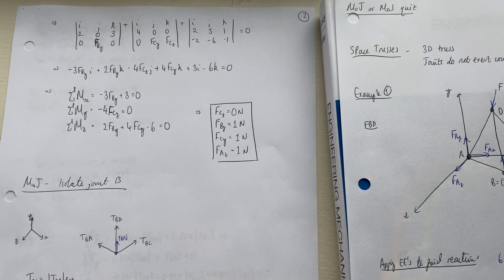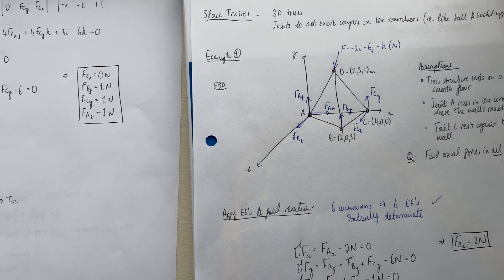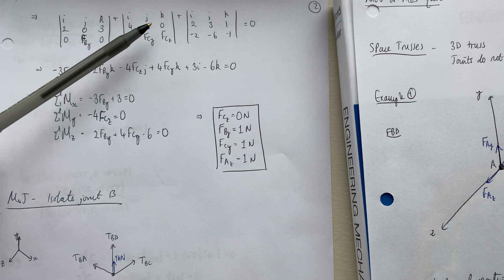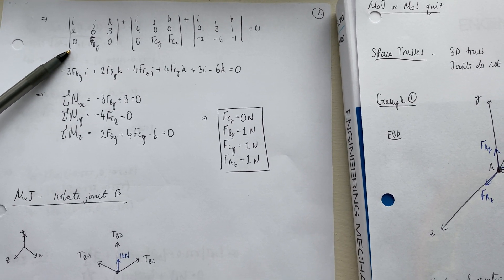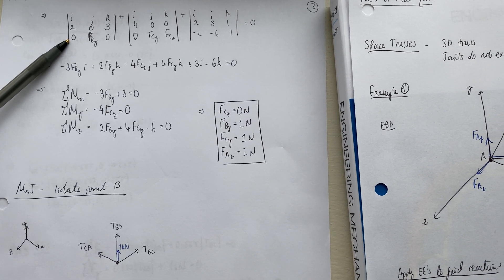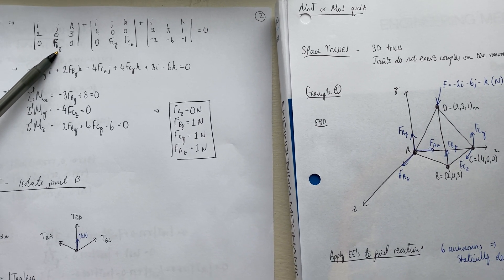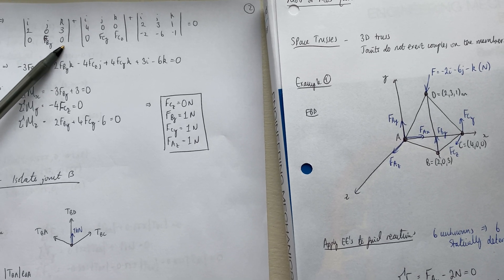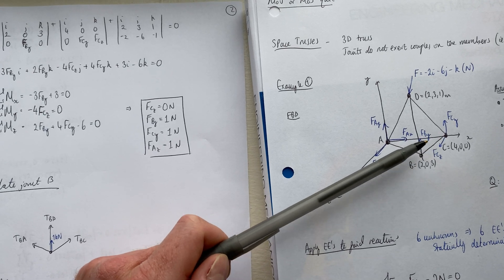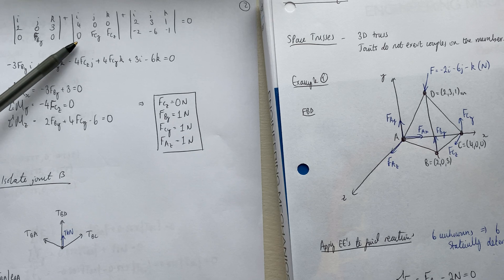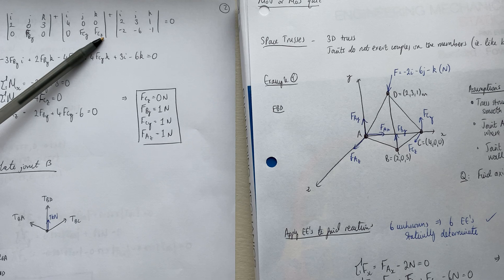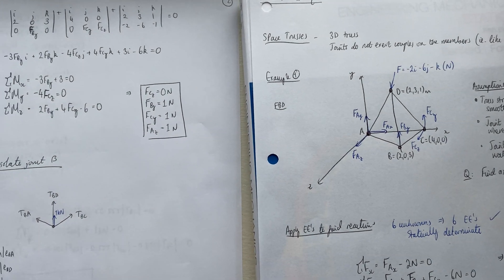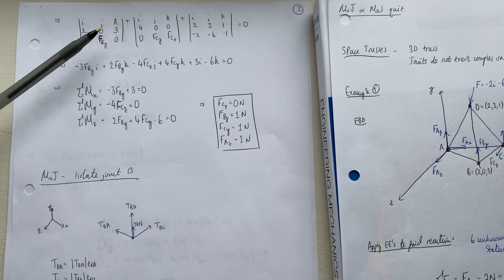We find the position vectors r_AB, r_AC, and r_AD and put them into determinants to calculate the cross products. In the third row we plug in the force vector at each point. At B we only have a reaction in the y direction, so the other two components are zero. At C we have reactions in y and z but no x component, so F_Cy and F_Cz go in here. For the force applied at D we plug in the given components.